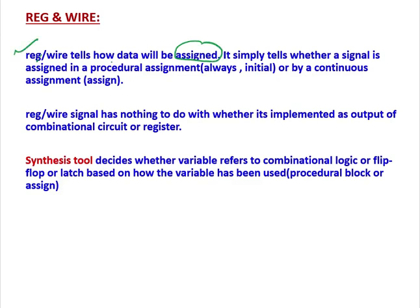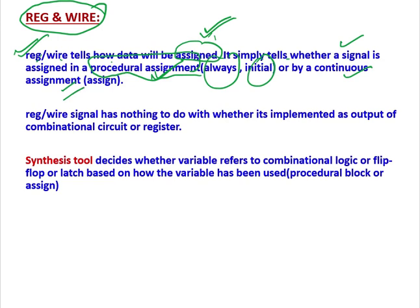This is one of the most important points: Reg or Wire tells how data will be assigned. It simply tells whether a signal is assigned in a procedural assignment or by a continuous assignment. The only difference between Reg and Wire is how you are assigning the data. Data can be assigned either in a procedural block — that is always or initial — or by a continuous assignment using the assign construct.